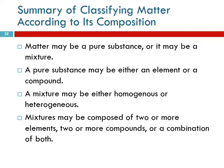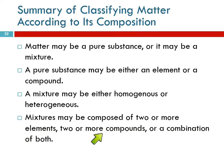So this is just a summary: matter can be a pure substance or a mixture. A pure substance can be an element or a compound. Mixtures can be homogeneous or heterogeneous. And an important point: mixtures can be composed of two or more elements, two or more compounds, or a combination of both. A mixture could be composed of anything, really.